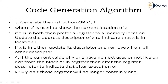The third stage of the code generation algorithm is to generate the instruction: operator j', comma L, where j' indicates the current location. If z is in bold, prefer a register over the memory location. Then update the address descriptor of x to indicate x at that memory location L, and remove x from other descriptors.